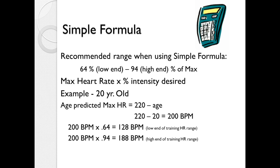The recommended range for the simple formula is 64 to 94% of the max. So for a 20-year-old, the age-predicted max would be 220 minus 20, or 200 beats per minute. Multiply 200 by 64% to get the low end, and by 94% to get the high end — giving a training heart rate range of 128 to 188 beats per minute. You won't give every client the entire range; you'll narrow it down based on age, health status, fitness level, duration, frequency, goals, and motivation. That's where the art of exercise programming comes in.